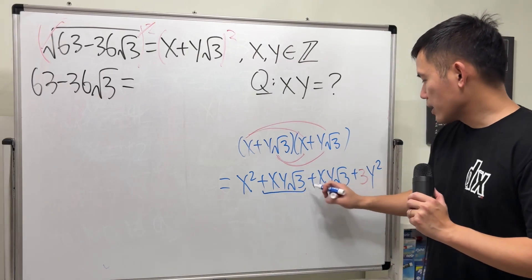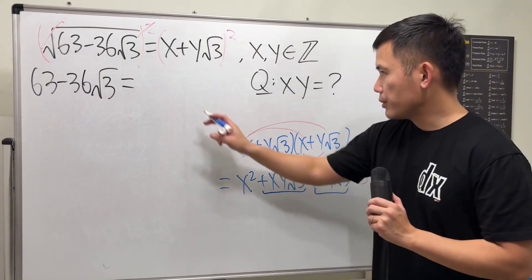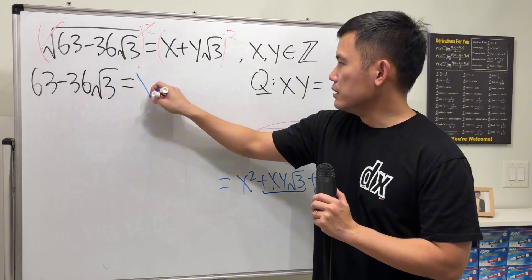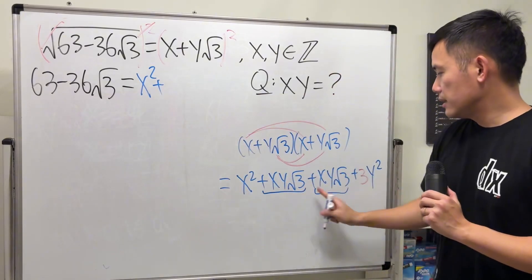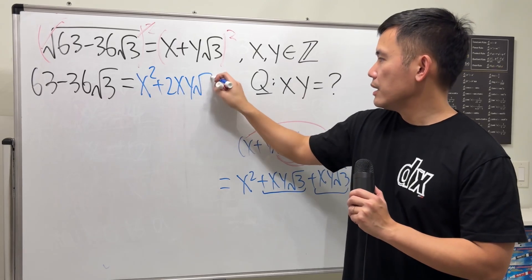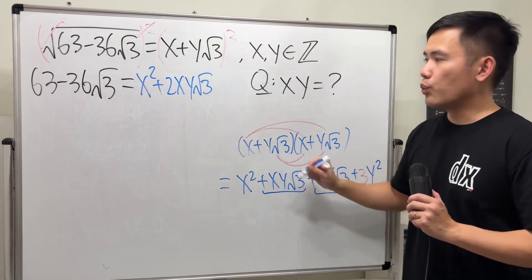Notice that we can combine this and that together. We have x squared plus two of them, 2xy square root of 3, and lastly, plus 3y squared.